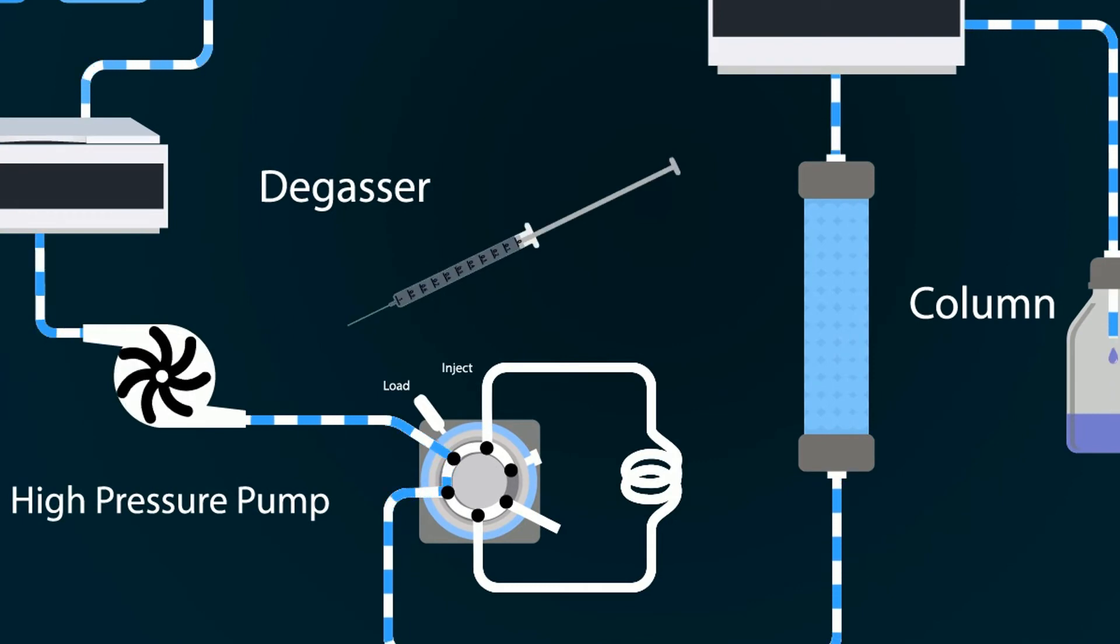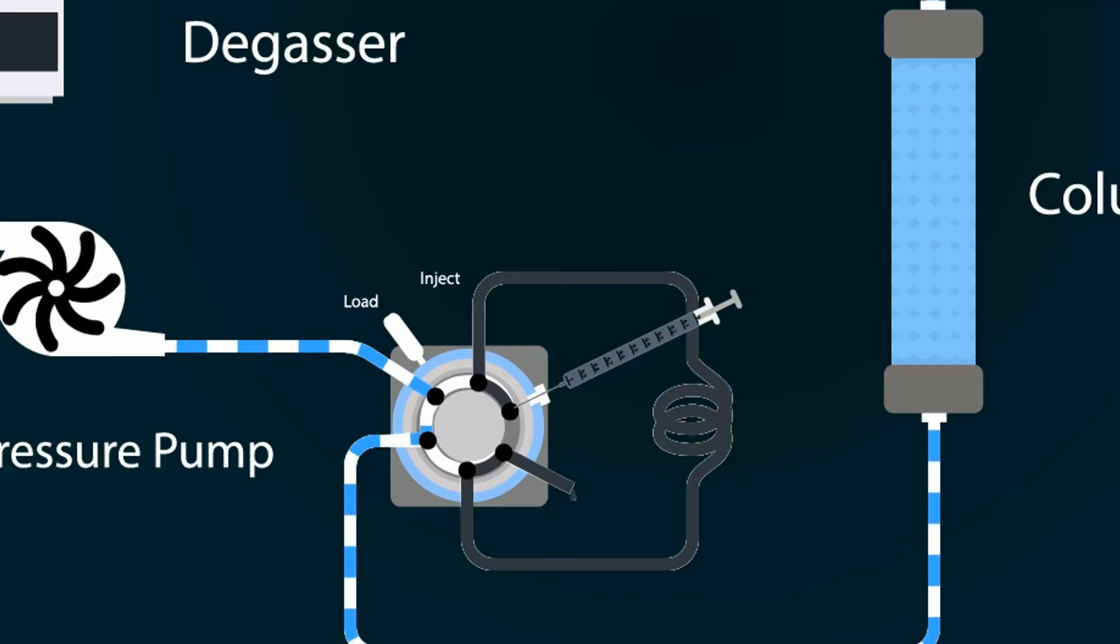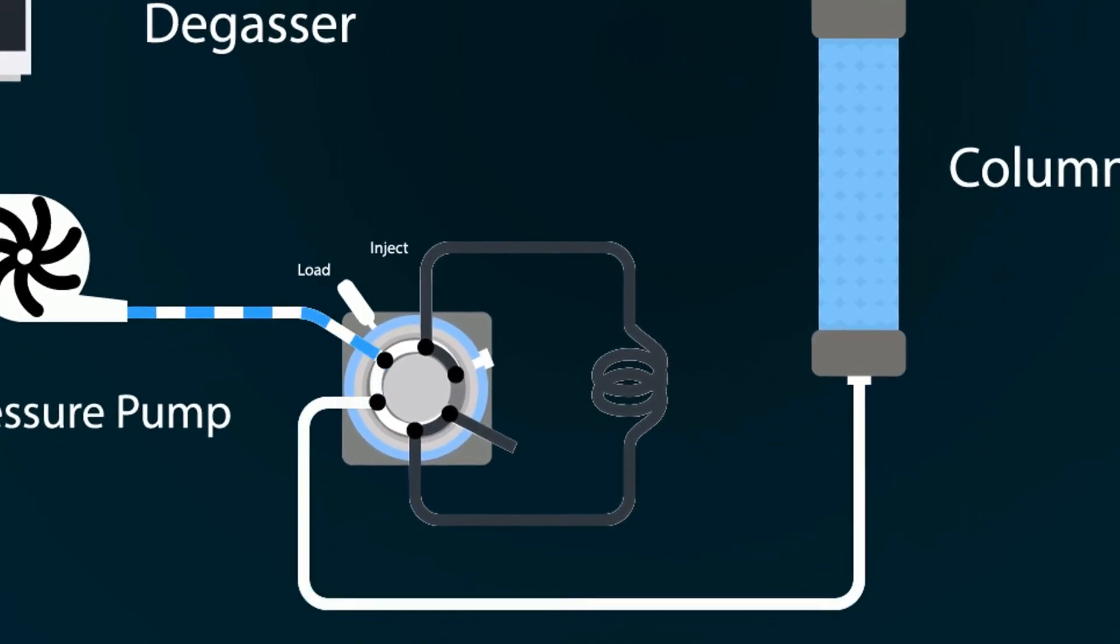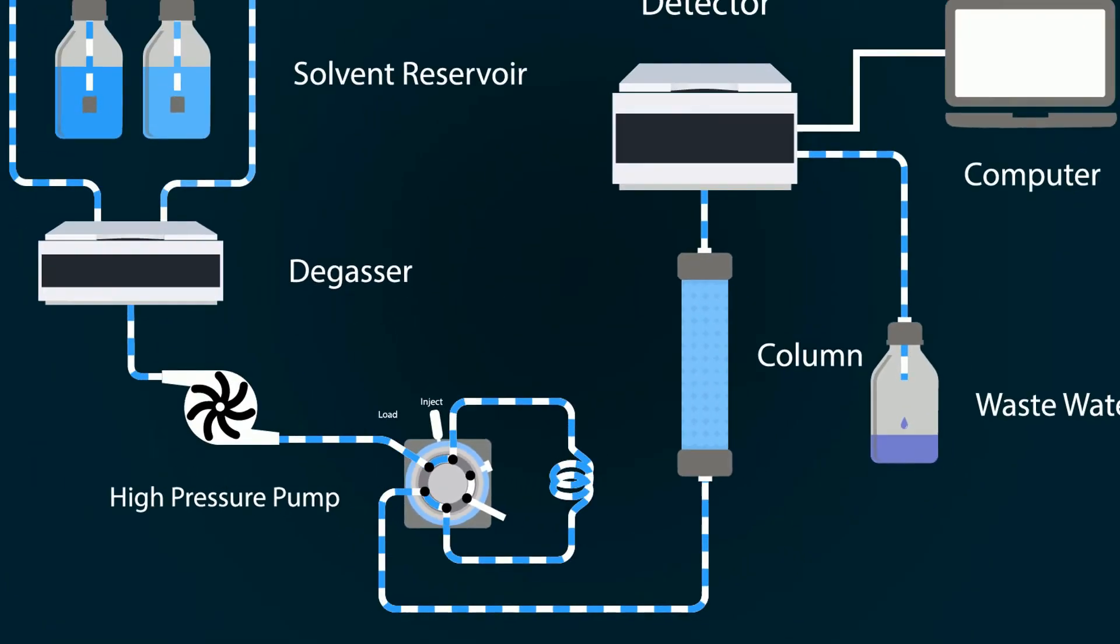Now put the sample using a needle and switch the knob from load to inject. The solvent takes our sample and moves towards the column and then the detector.